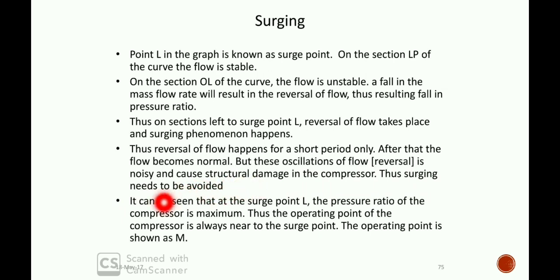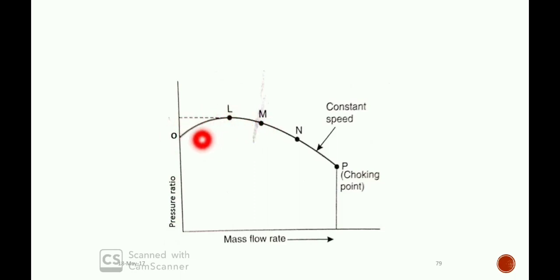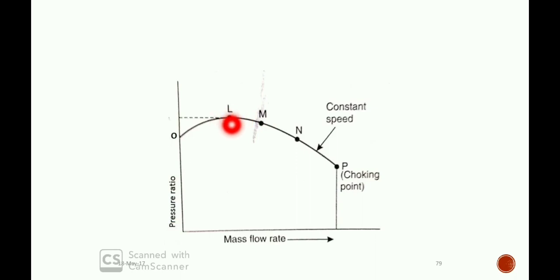Surging needs to be avoided. The best design operating condition will be at either point M or N, which will be closer to the surge point but should not fall below the surge point. The operating condition of the compressor should not fall below the surging point.